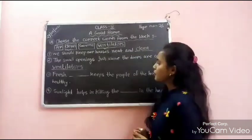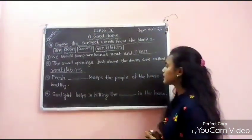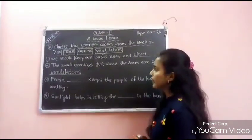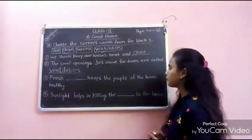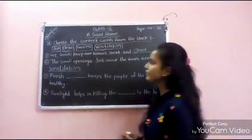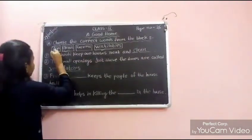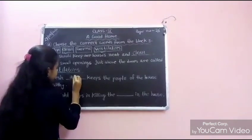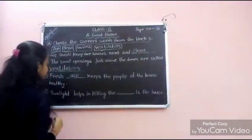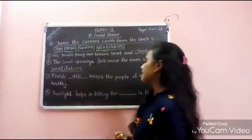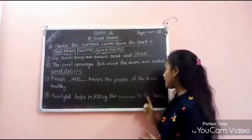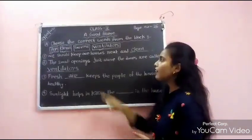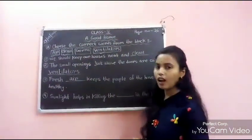Number 3: Fresh dash keeps the people of the house healthy — the answer is fresh air keeps the people of the house healthy. Number 4: Sunlight helps in killing the dash in the house — the answer is sunlight helps in killing the germs in the house.